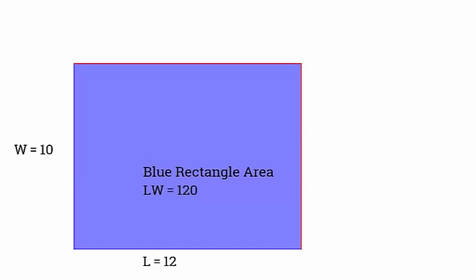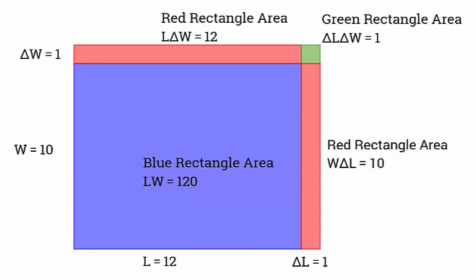Suppose the rectangle starts with measurements 10 by 12, an area of 120 square units. If we increase both sides by 1, the area becomes 143 square units, an increase of 23.